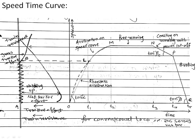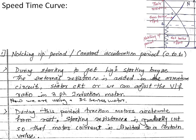The tractive effort is the force developed by the traction unit at the wheel rim for moving or linearly accelerating the locomotive and its train. Train resistance is defined as the force required to encounter resistance arising due to the train, track, gradients, curves, acceleration, and wind at different times and places. To meet the requirement of high starting torque, DC series motors are used in the locomotive.